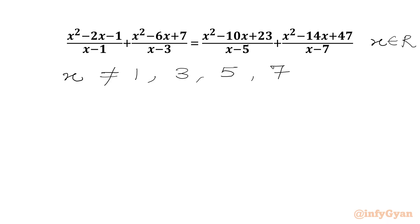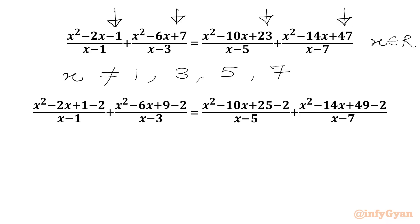Now in the numerators we have minus 1, we have 7, we have 23, and we have 47. We can write minus 1 as 1 minus 2, 7 as 9 minus 2, 23 as 25 minus 2, and 47 as 49 minus 2.